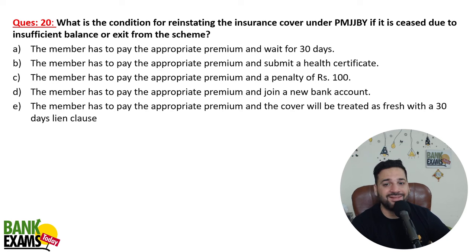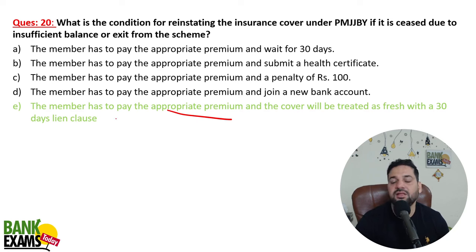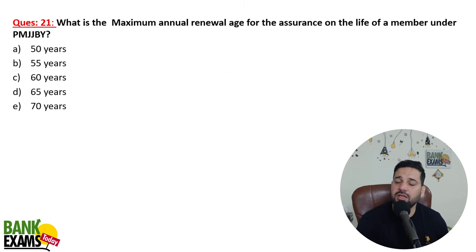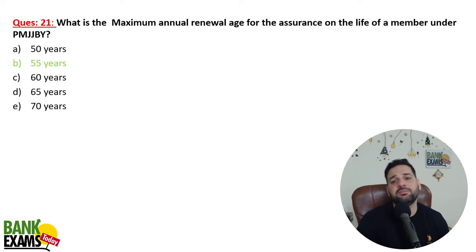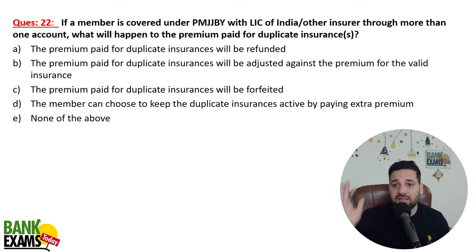If the policy is seized due to insufficient balance or exit from the scheme, to reinstate it the member has to pay the appropriate premium, and the cover will be treated as fresh with a 30-day lean clause again applicable. So if you missed your previous premium, pay it now and a new 30-day lean clause will apply — no cover during those 30 days. The maximum annual renewal age for PMJJBY is 55 years: you can join up to 50, pay premium up to 55, and get cover up to 55, but cannot join after 50.